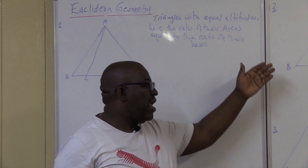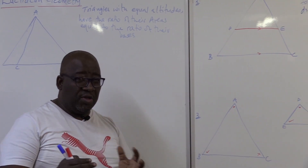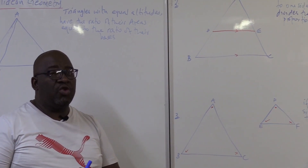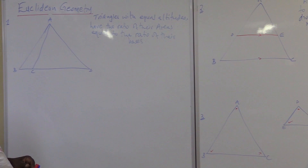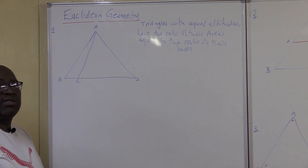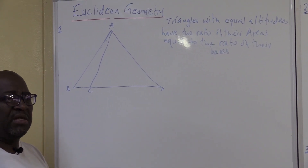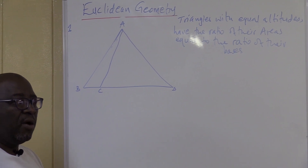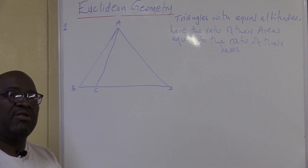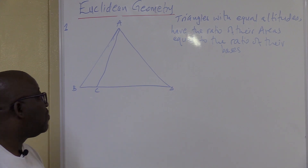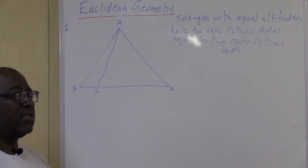So definitely at the end of the year, you'll find one of these two theorems for you to prove, so you've got certain maths to work on already. The equal altitudes theorem says: triangles with equal altitudes have the ratio of their areas equal to the ratio of their bases. For this theorem to work, both triangles must have the same altitude — that is, the perpendicular height.